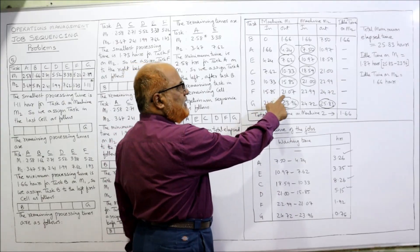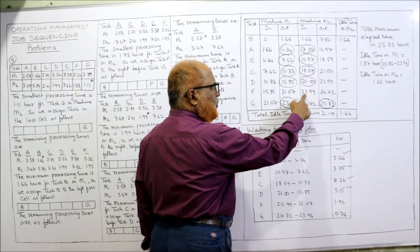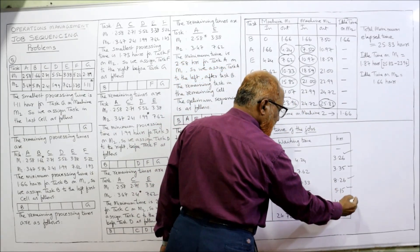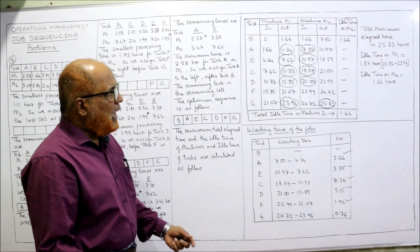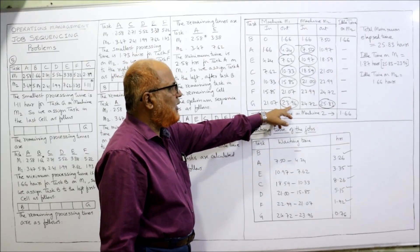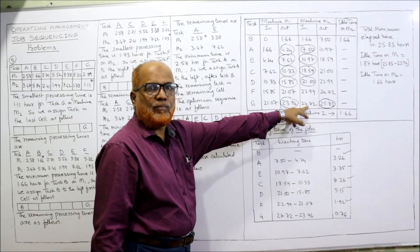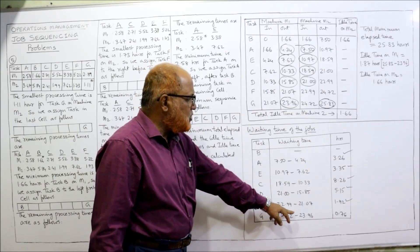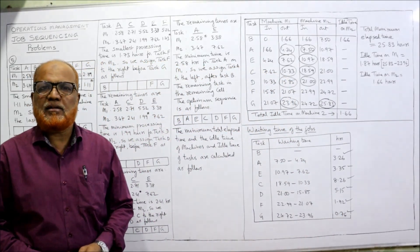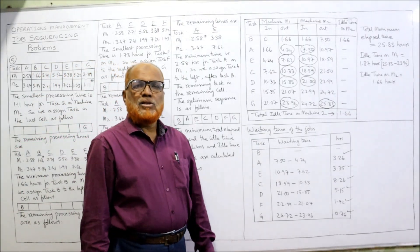Job F was completed on M1 at 21.07, but M2 starts at 22.99: waiting time = 22.99 − 21.07 = 1.92 hours. The last job G was completed on M1 at 23.96, but M2 starts at 24.72: waiting time = 24.72 − 23.96 = 0.76 hours. These are the waiting times for all jobs.